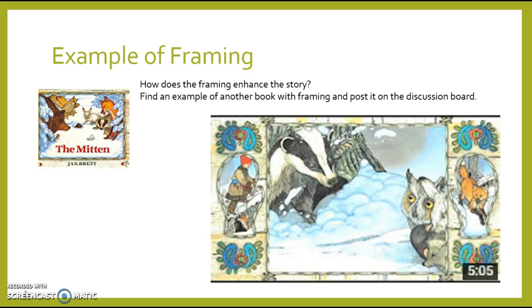Another piece they talked about was framing, and one of my favorite framing stories is The Mitten by Jan Brett. I actually took this picture from a YouTube read-aloud. As you can see, in the center they have the main story going on, but the frames on the side are separate stories. The one to the left follows the boy as he's lost his mitten, and the frame on the right is a predictive frame of what animal will appear next in the story. I'd like you to find an example of another book with some sort of framing, post that example on the discussion board, and talk about how it enhances the story and supports the reader.